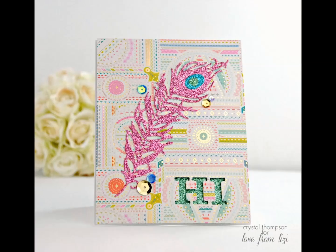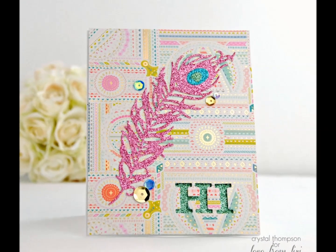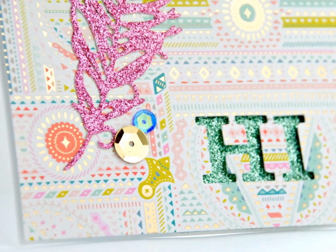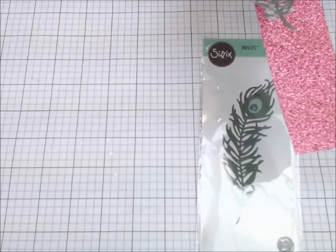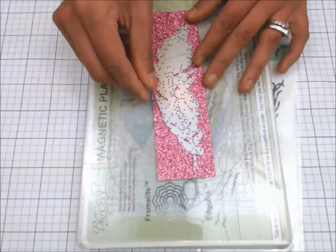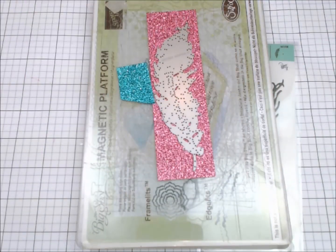Hey guys, welcome to my stop of the birthday hop for Love From Lizzie. I am here with a fun card made with lots of glitter and a beautiful feather die included in this September kit. I am die cutting this feather out of glitter paper.